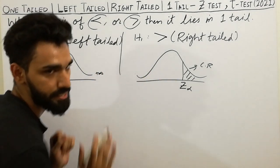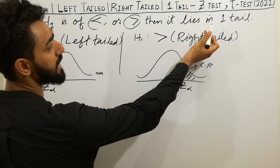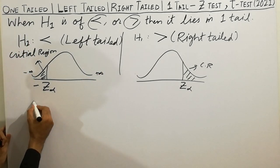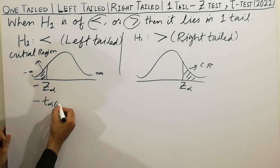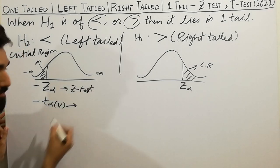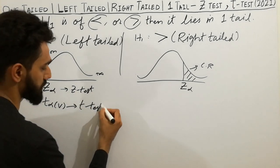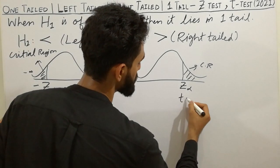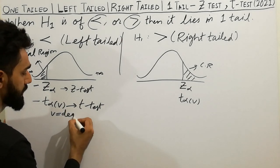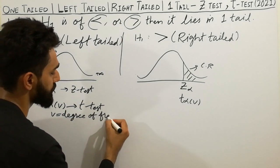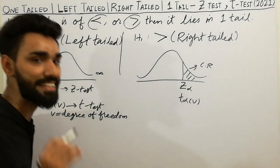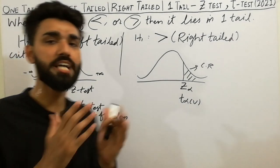This diagram is for the z-test. For the t-test, replace Z-alpha with minus T-alpha-V on the left and positive T-alpha-V on the right. Here V represents the degrees of freedom. So Z-alpha is used for the z-test and T-alpha-V is used for the t-test.